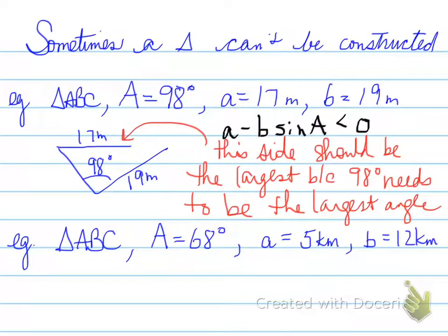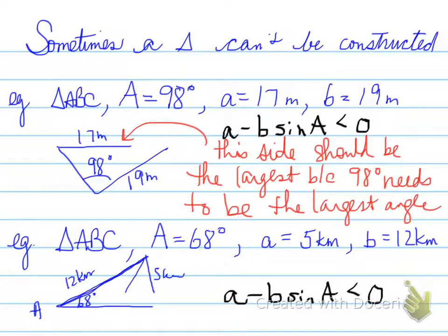The next part, triangle ABC, where angle A is 68, little a is 5, and side B is 12. We need to determine if this is okay. Well, angle A is 68 degrees. Adjacent side is 12 kilometers, and then you have two opposite sides floating around on the bottom, and because there are two floating sides, we have two possible triangles.